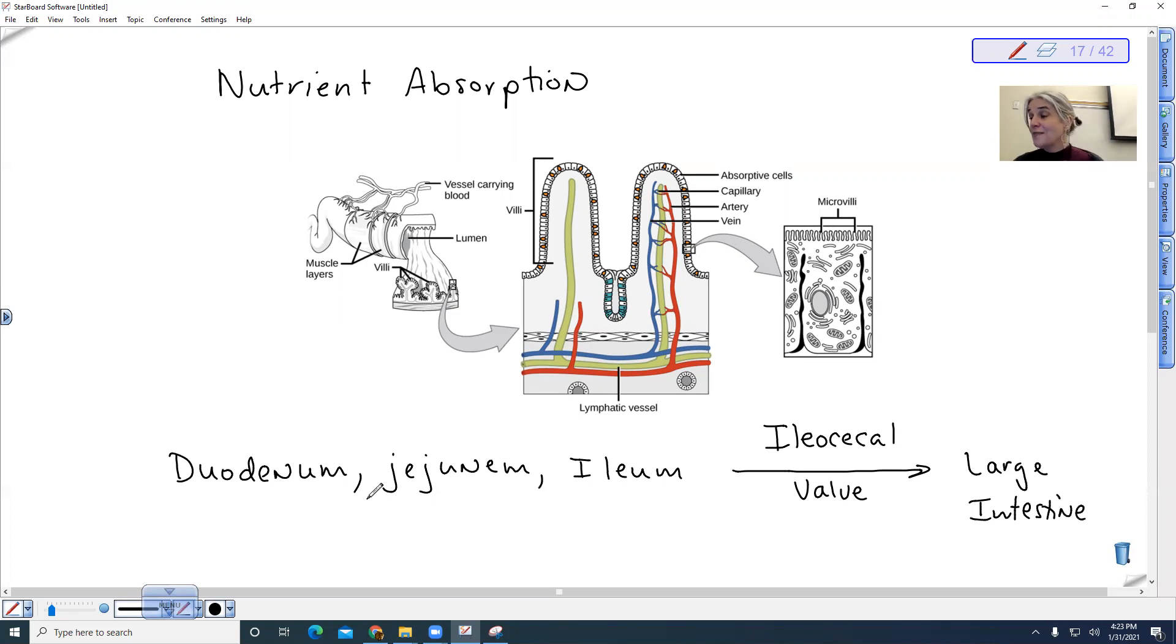So we talked about the duodenum. That's where chemical digestion takes place. And then absorption occurs down the whole length of your small intestine. The small intestine is actually longer than your large intestine, and it has a much greater surface area.